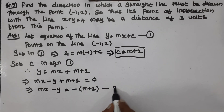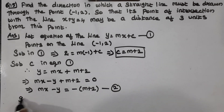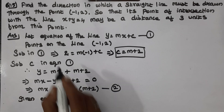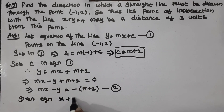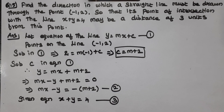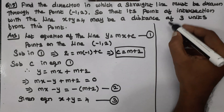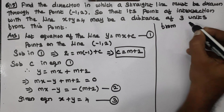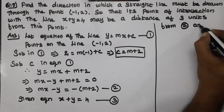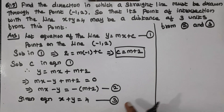This is equation number 2. The given equation is x plus y equals 4, which we take as equation number 3. Let's simplify these two equations together. From equations 2 and 3, we solve simultaneously.